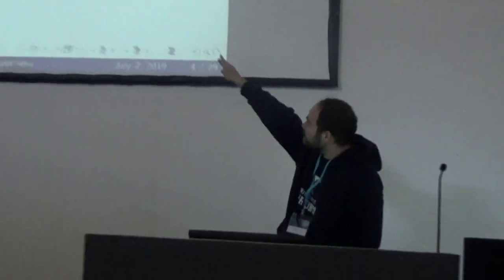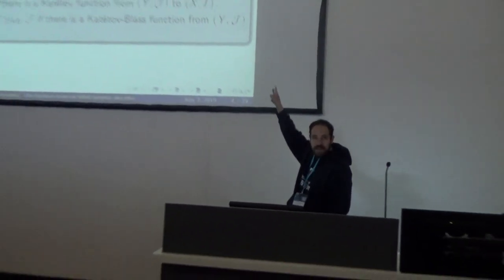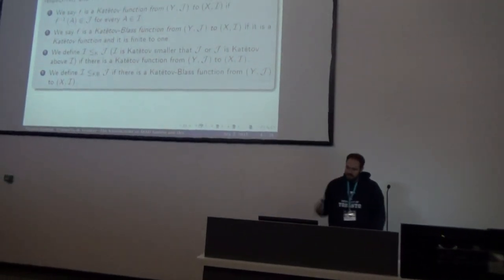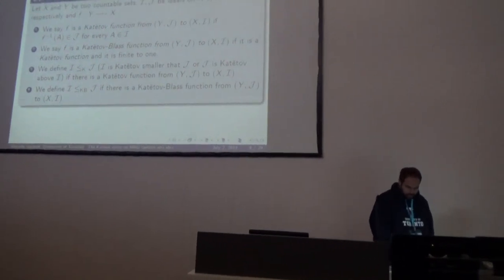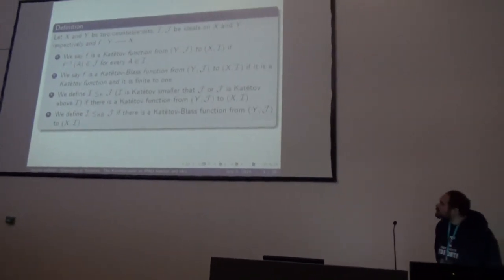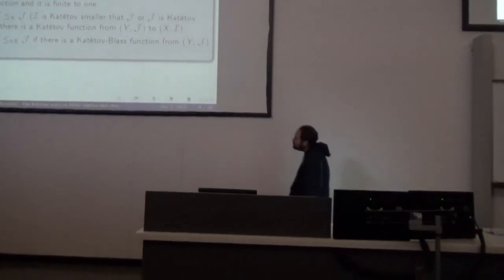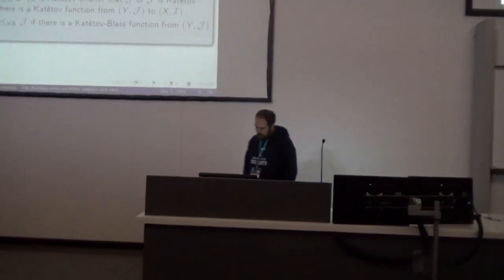Katětov-plus requires the function to be finite-to-one. We say that I is less than J in the Katětov order if there is a Katětov function from (Y, J) to (X, I). The order is shifted accordingly, and similarly for the Katětov equivalence relation.